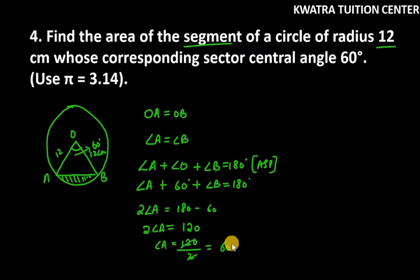That means angle A is 60 degrees, that means angle A and angle B are equal. That means this is an equilateral triangle.